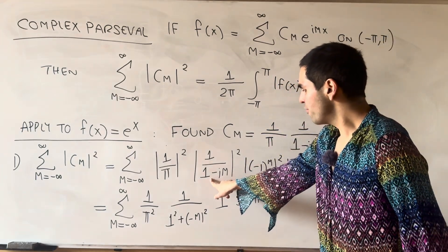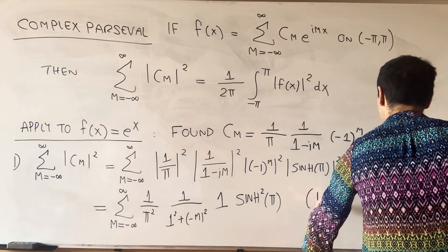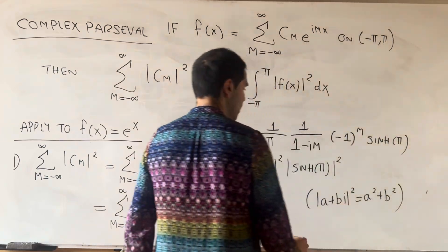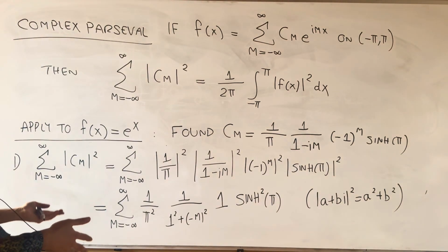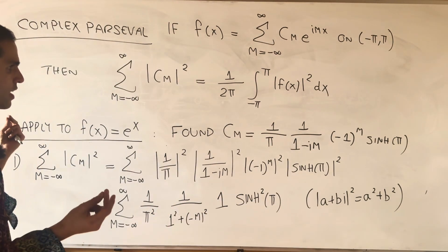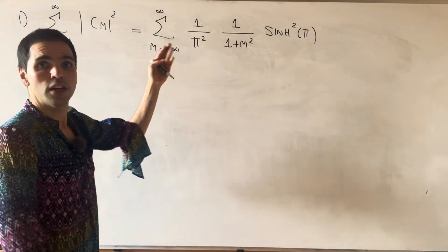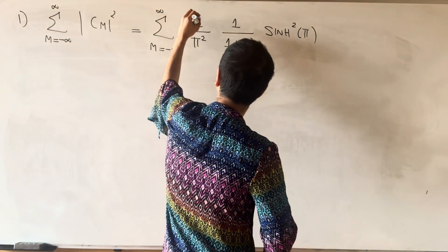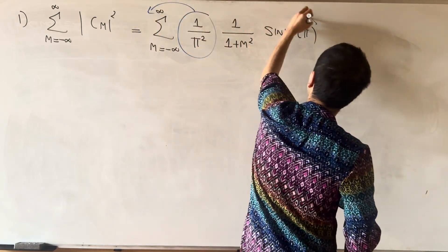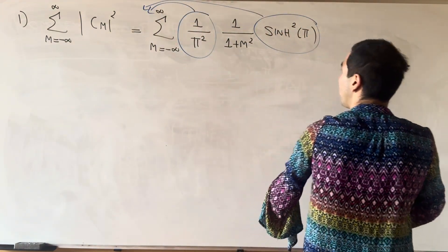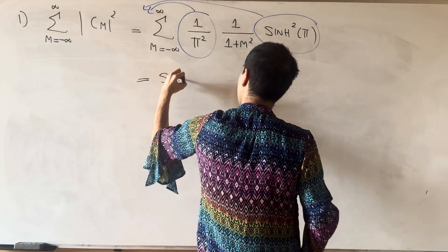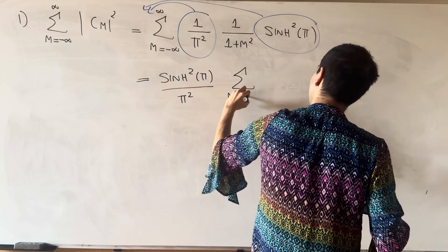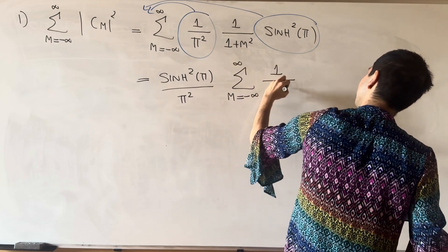So the left side simplifies to the sum from minus infinity to infinity of 1 over pi squared times 1 over (m squared plus 1) times sinh squared of pi. Anything not depending on m can be pulled out, so we get sinh squared of pi over pi squared, times the sum from minus infinity to infinity of 1 over m squared plus 1.